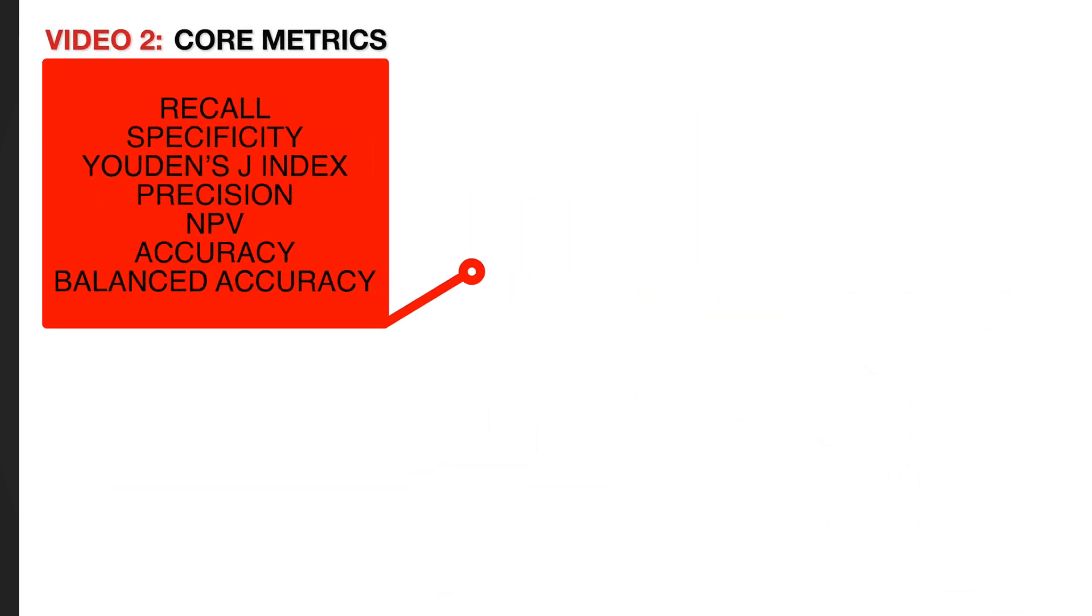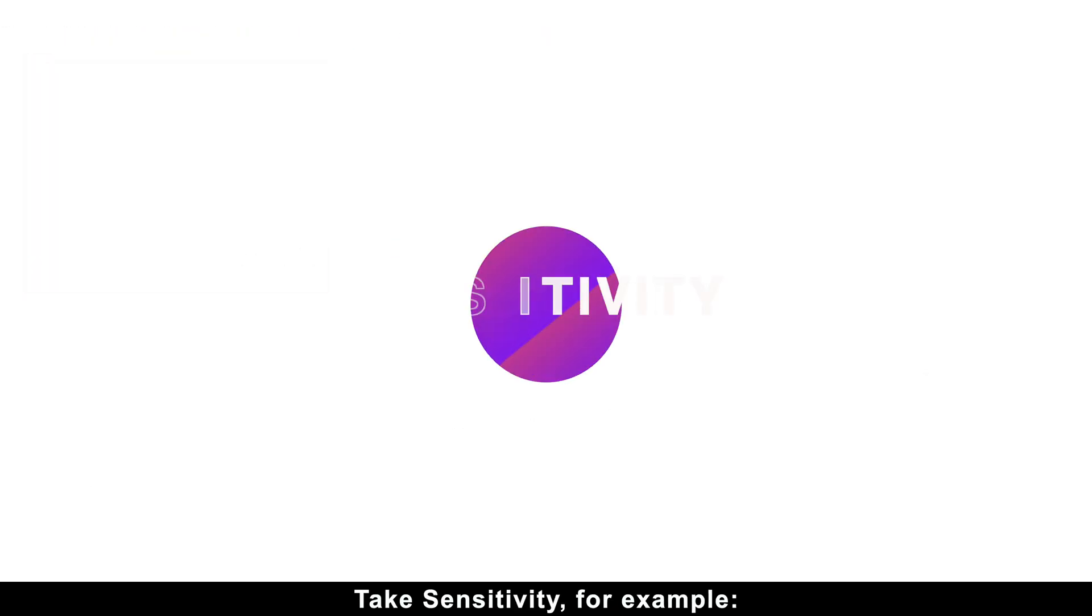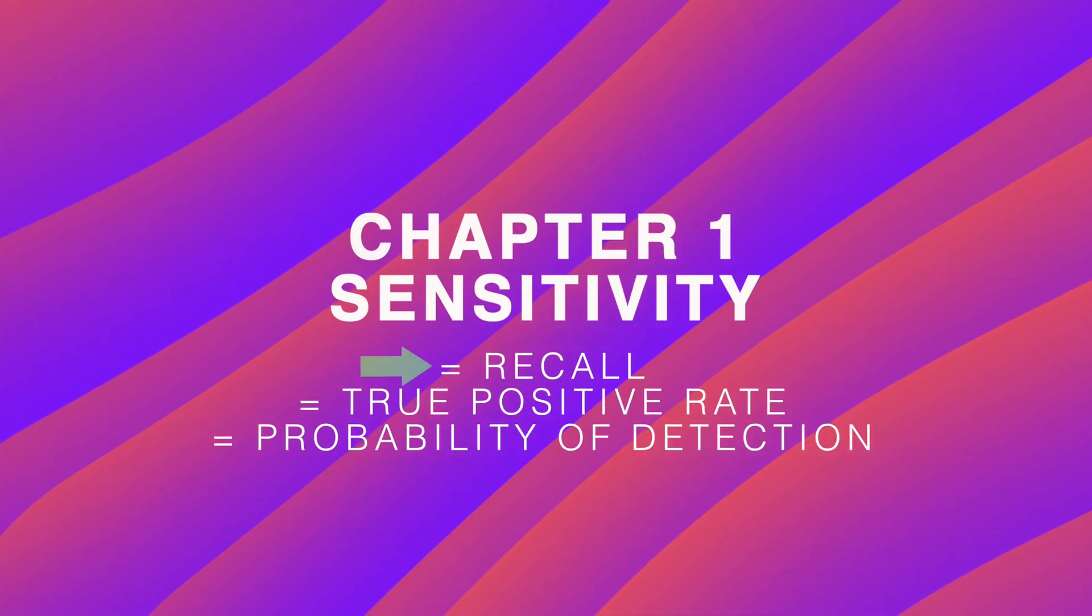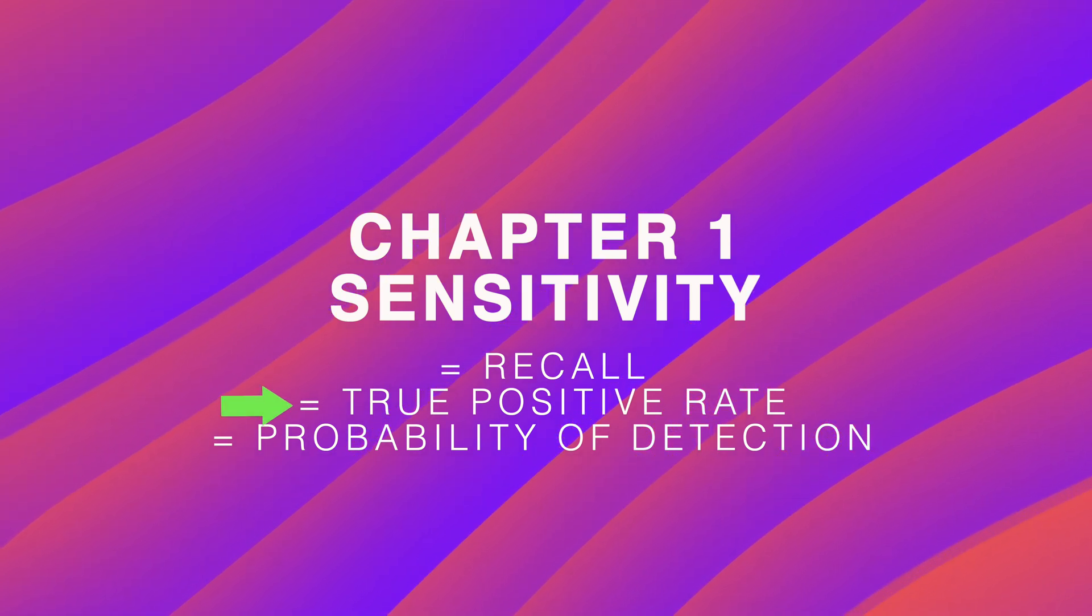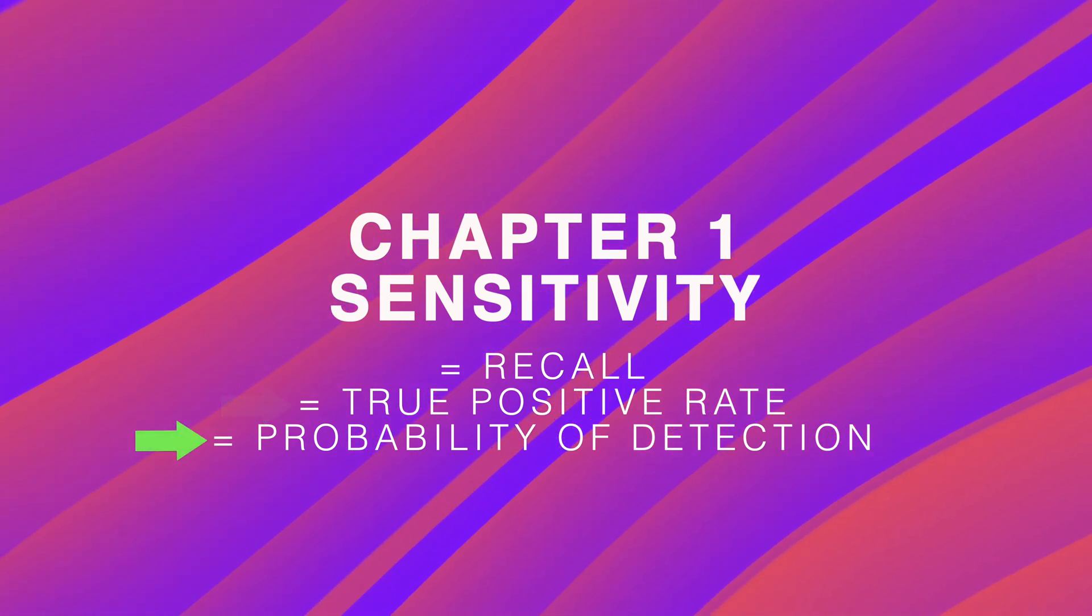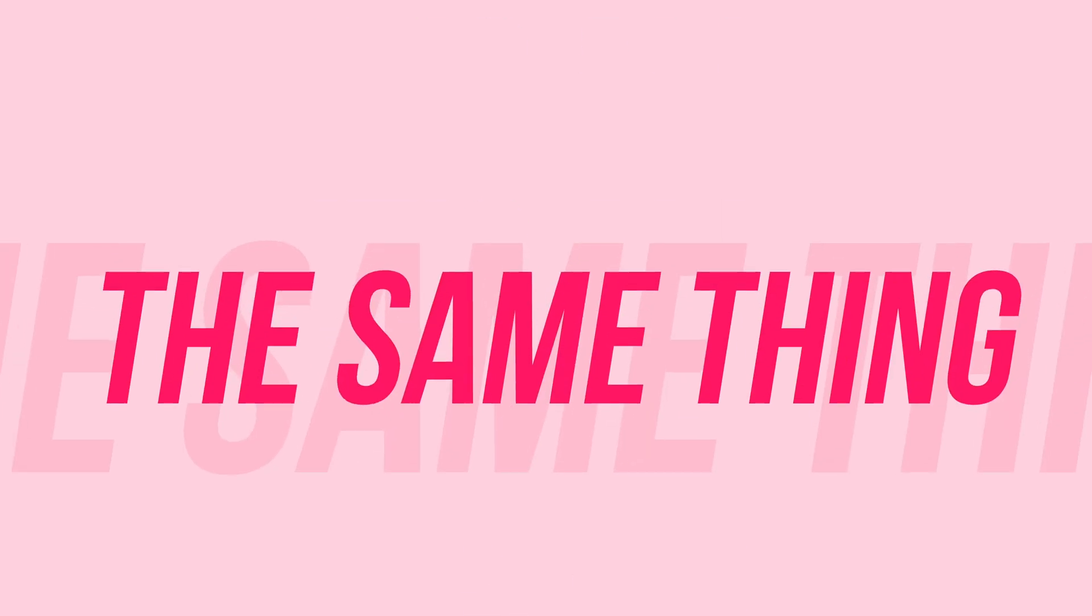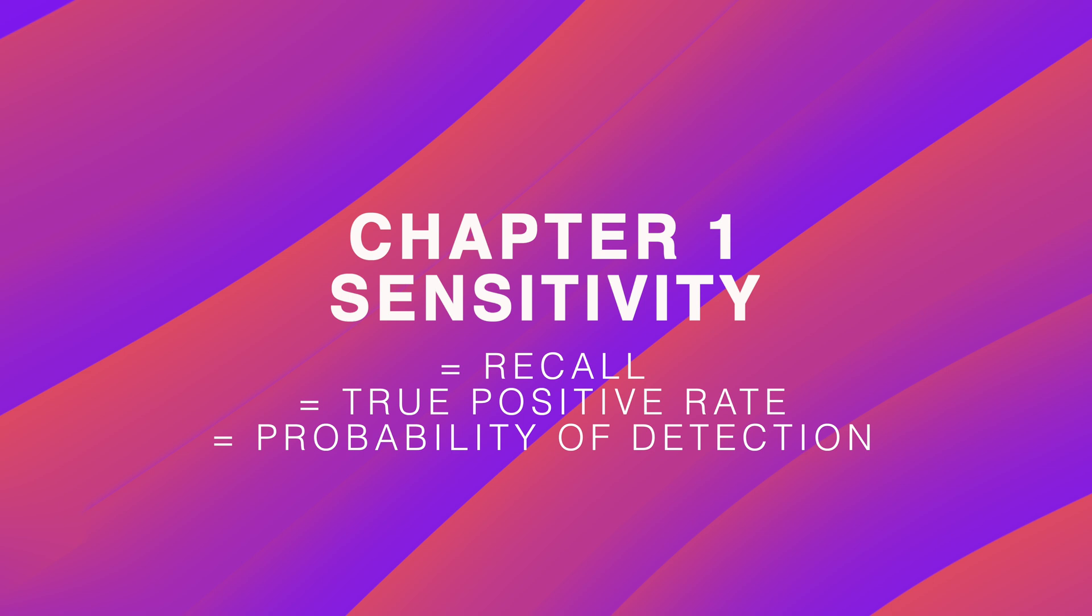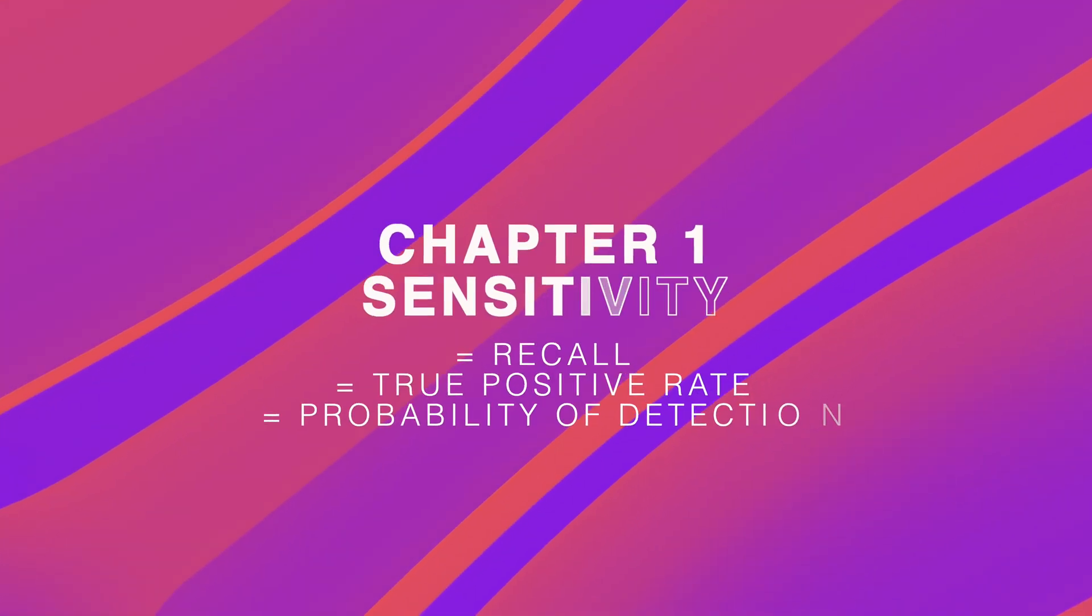One problem we need to solve up front is these metrics have multiple names depending on the field you are in. Take sensitivity, for example. In machine learning, it's called recall. In medicine, it's the true positive rate. Engineers refer to it as the probability of detection. It's all the same thing, but the names change depending on who you are talking to, and that can be confusing as hell.